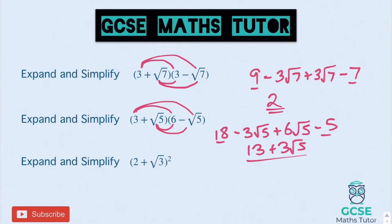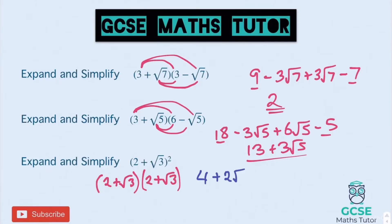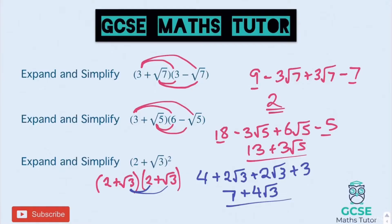On to the last one. We've got to rewrite this as a double bracket: (2 + √3)(2 + √3). So 2 times 2 is 4. 2 times root 3 is 2 root 3. Root 3 times 2 is another 2 root 3. And root 3 times root 3 is 3 — positive 3 this time. Adding those up: 4 at the front and 3 at the back makes 7. And 2 lots of 2 root 3 makes 4 root 3. Final answer: 7 plus 4 root 3.